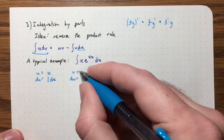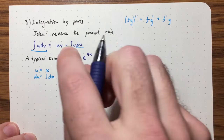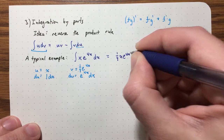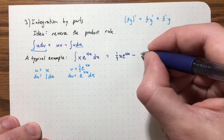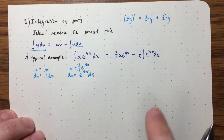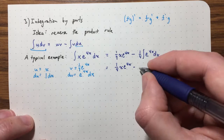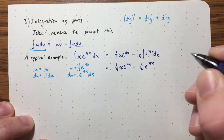We did that integral before. Now copying down the right side of the formula: uv minus the integral of v du gives (1/4) x e to the 4x minus the integral of (1/4) e to the 4x dx. This is an easier integral than the one we started with, so the method was successful. Our final answer is (1/4) x e to the 4x minus (1/16) e to the 4x plus c.